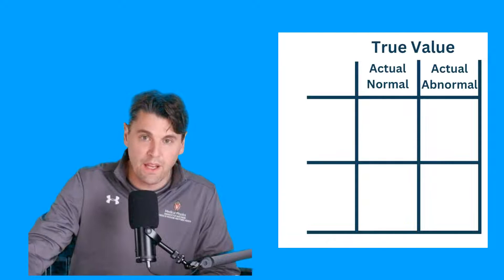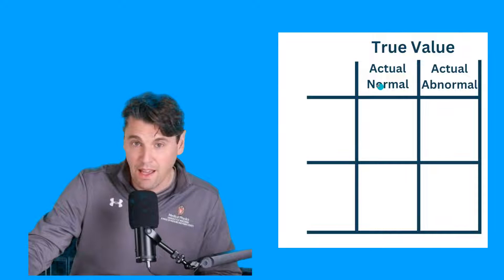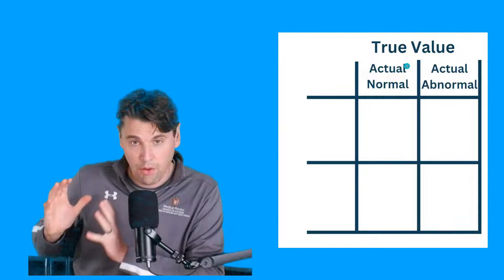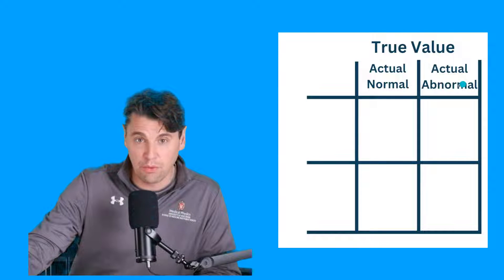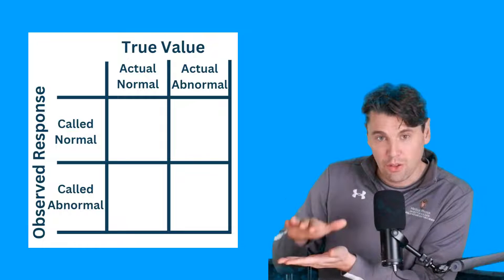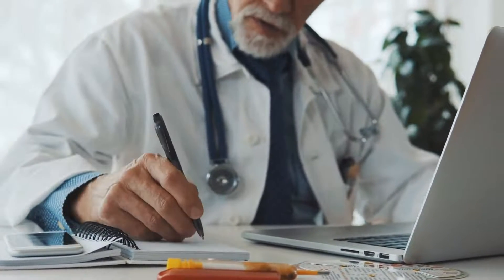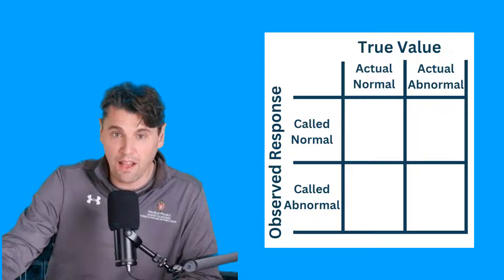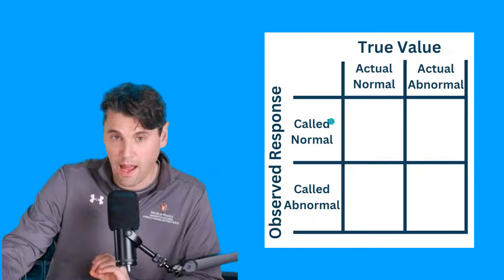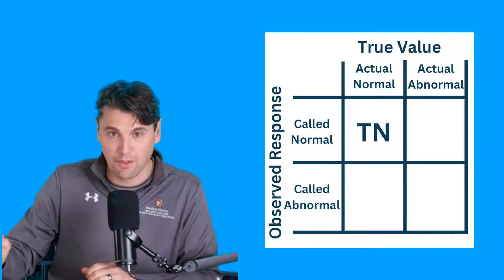We like to use a little square to talk about the different options that are possible when we're making our decision. If we knew the ground truth values — that's what we're calling the true values here — it can be actually normal, so just normal breast tissue, or it can be actually abnormal, so a cancerous tissue. Then if you look at the observed response — after looking at the image, for instance — the radiologist is going to make a decision and say either there's cancer here or there's not cancer here, calling it normal or abnormal.